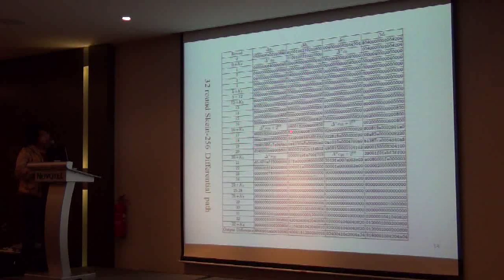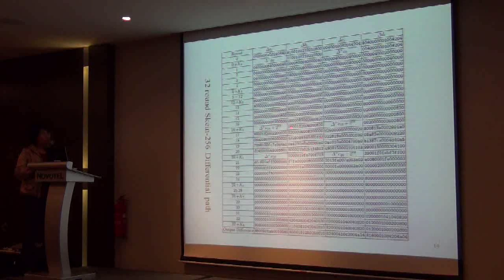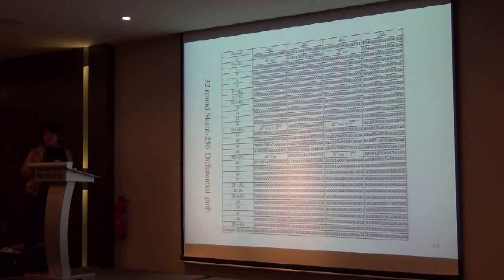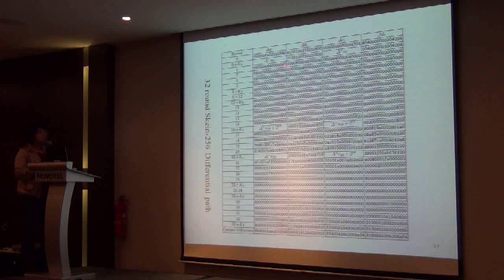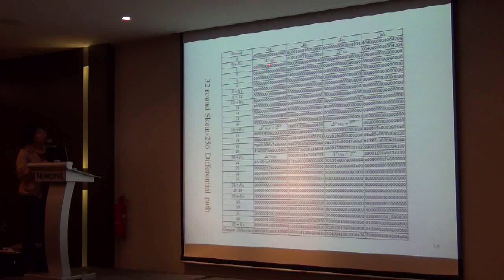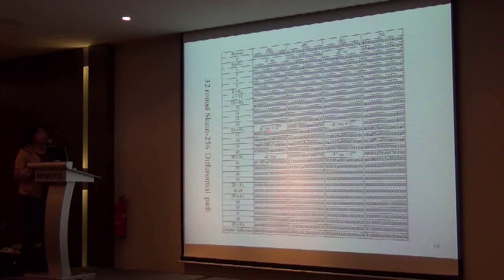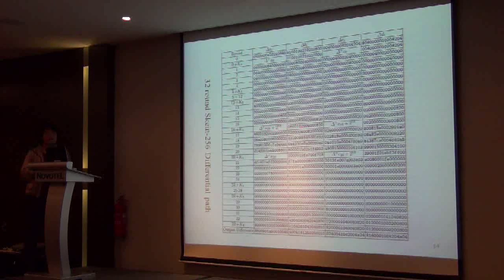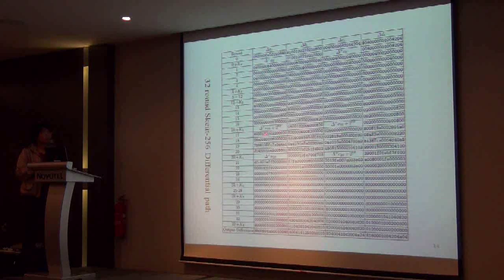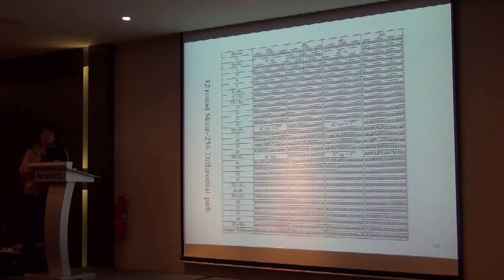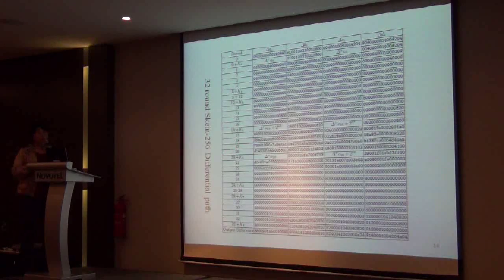This is our differential path. From the differential path, we know even in the middle rounds of the path, the difference in our path is very small. For us, we use the modular difference in these positions. That is to say, the position after the key is involved in A and C positions, because in this position they are not included in the XOR operator, only in the modular addition operator.